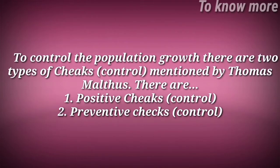Food production cannot be increased suddenly, and at the same time society cannot fully stop population growth. To control population growth, Thomas Malthus mentioned two types of checks: number one, positive checks, and number two, preventive checks.